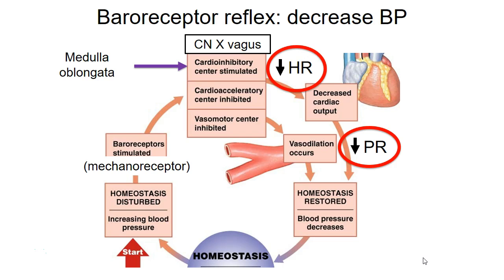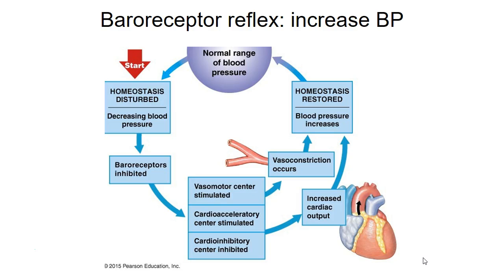The initial stimulus was elevated blood pressure, and the overall effect was to decrease it through decreasing heart rate and decreasing peripheral resistance. This is a short-term way to regulate blood pressure; longer-term mechanisms will be discussed on Thursday.